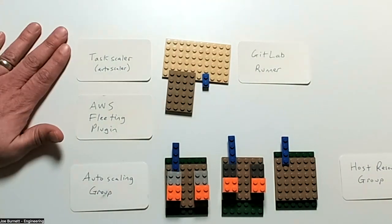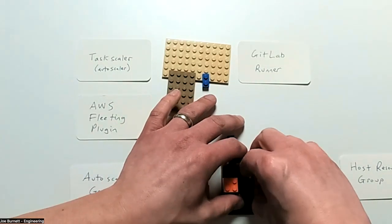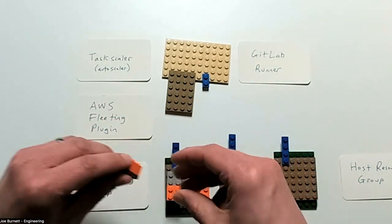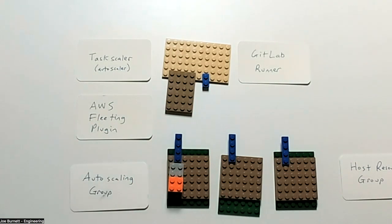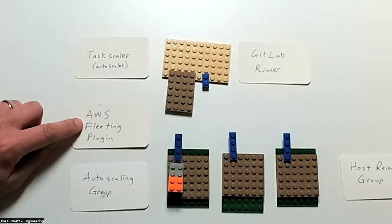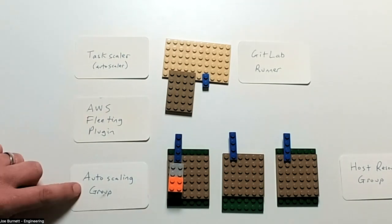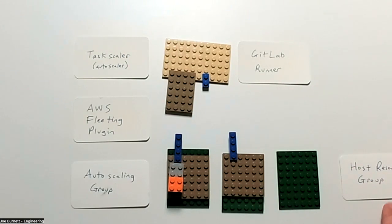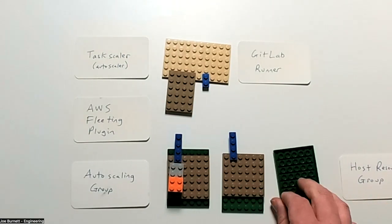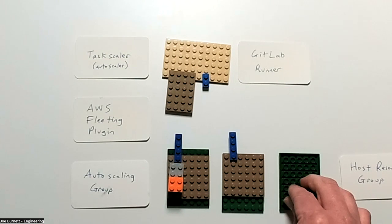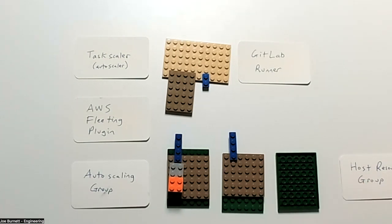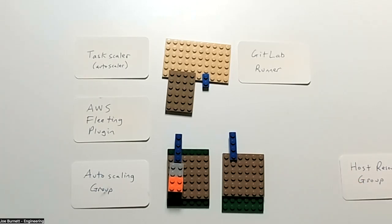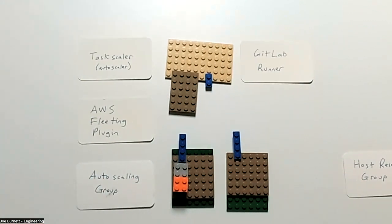Likewise, when TaskScaler sees that we don't need all this capacity anymore. Maybe most of the jobs are finished. They could say, okay, I think I'm done with this instance. So it'll tell AWS fleeting plugin delete this instance. Autoscaling group will delete that specific instance. Host resource group will notice that, it'll start scrubbing the, this will start a scrubbing process. Host resource group will see that this thing is unused for 24 hours and will eventually remove it. So that's the gist of it. That's the whole lifecycle of autoscaling jobs on AWS Macs.